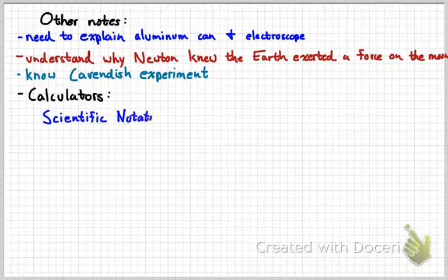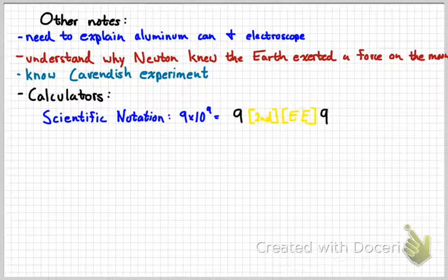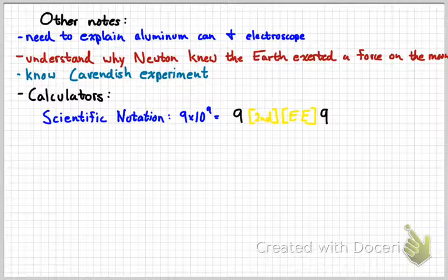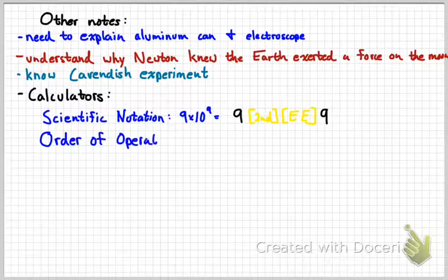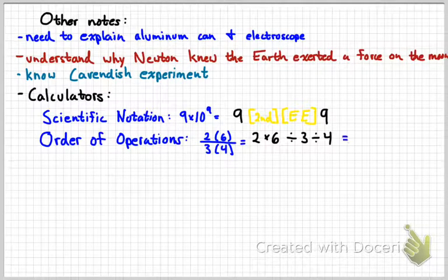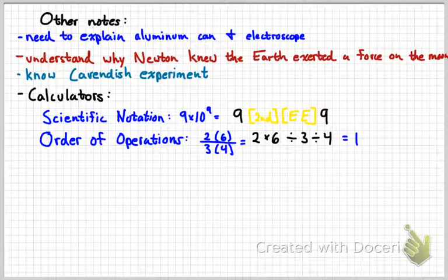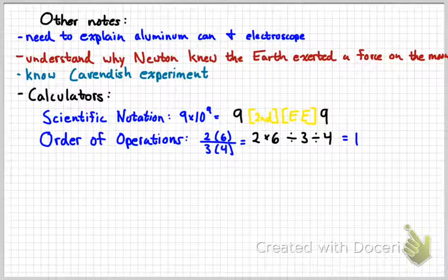A couple of things about calculators. A lot of scientific notation in this unit. Remember, we use the EE key, which is right above the comma. So, if you wanted to put in the number 9 times 10 to the 9, you would press 9, second EE, and then the exponent is 9. If you use times 10 and then the carat, you're going to make mistakes. Other thing to remember, order of operations. We seem to mess this up quite a bit during this unit. If you have something where you have two numbers on the bottom of a fraction bar, remember to press the divide key in between each of them. So, something like 2 times 6 over 3 times 4, you would enter as 2 times 6 divide 3 divide 4. It should give you 1. If you get something different than that when you enter that into a calculator, you're doing something wrong and you need to fix it before your test.